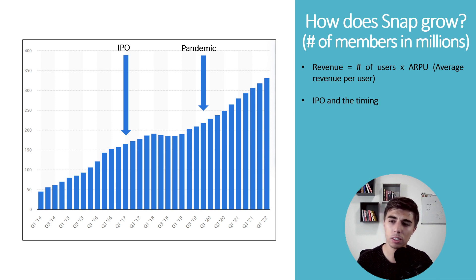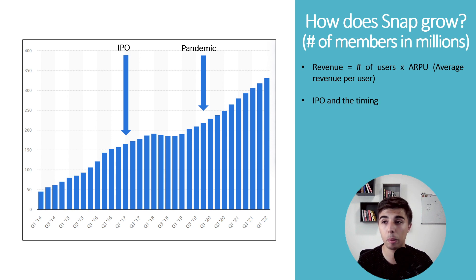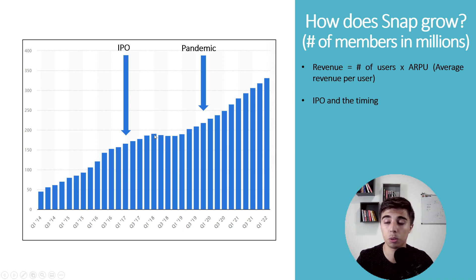On this chart you'll see the number of daily active users in millions. There are two events relevant here. The first is the IPO — back in Q1 2017 they became a public company. What's common for every public company is that they have a great story backed up by historical performance. In the case of Snap, the user growth looked amazing. But right after the IPO, growth kind of stopped and there was even a decline in daily active users.